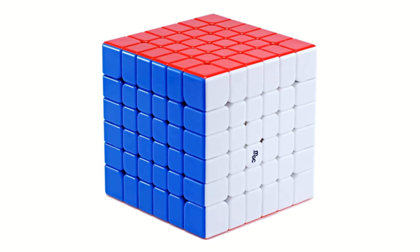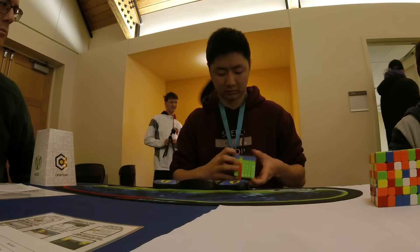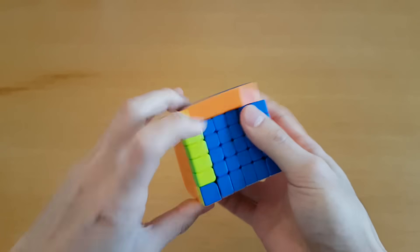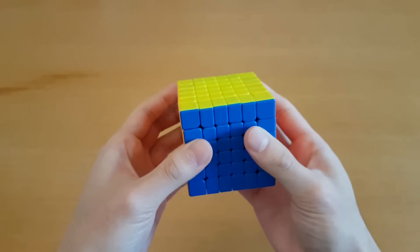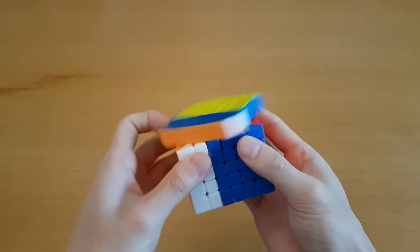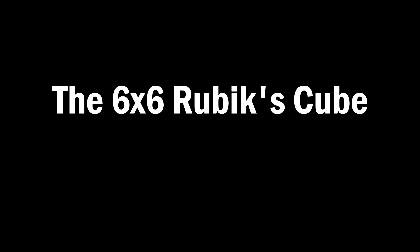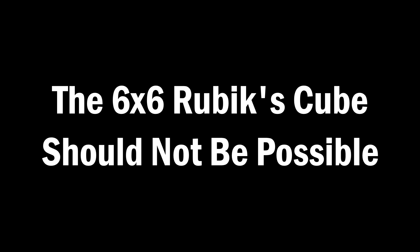This is the 6x6 version of the Rubik's Cube. This is an event held at official competitions and there are world records for it. Speedcubing design has come such a long way that this cube can turn nearly as fast as the best 3x3 cubes. But there is one problem. The 6x6 Rubik's Cube should not be possible.